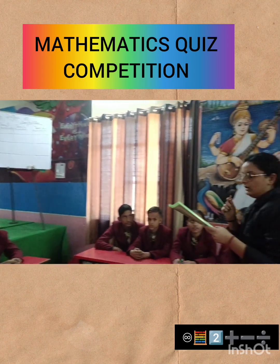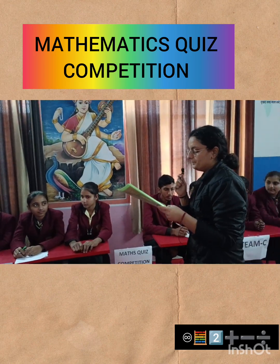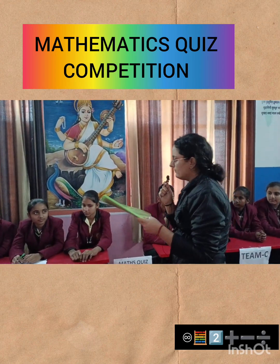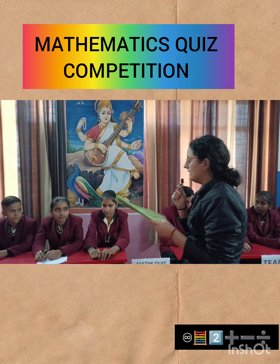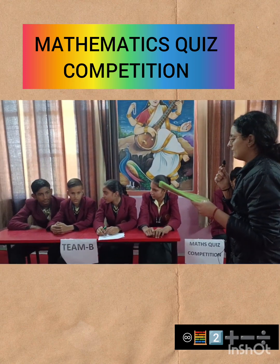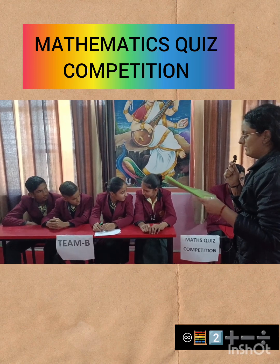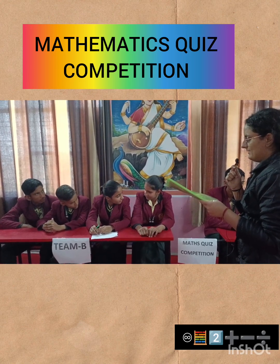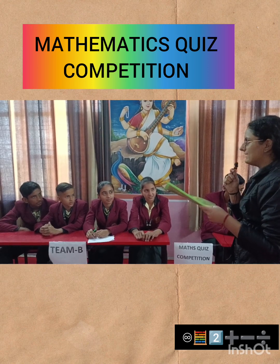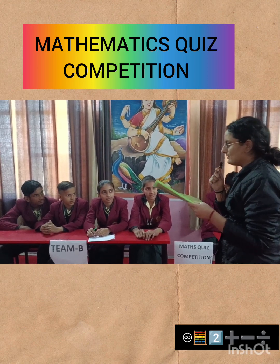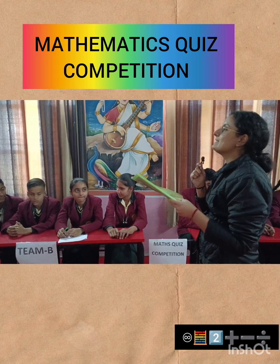Next question for Team B: the surface area of a cuboid is dash. The answer 6a² is wrong — minus one for Team B.